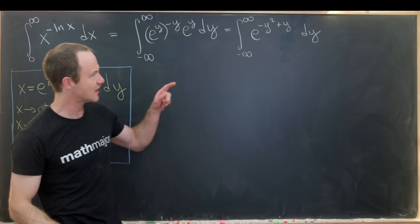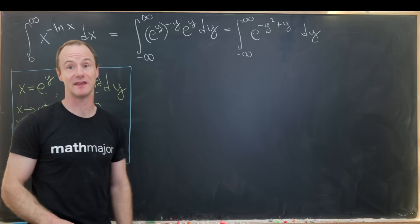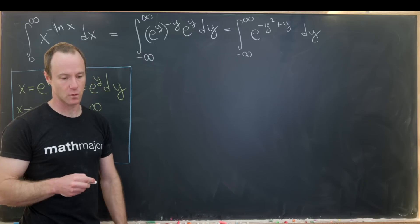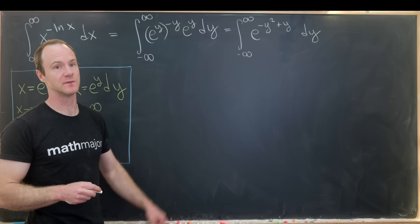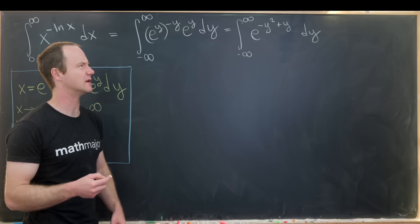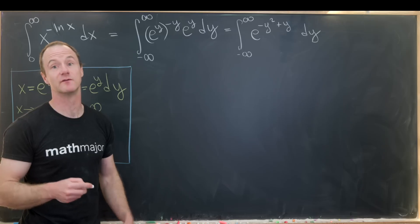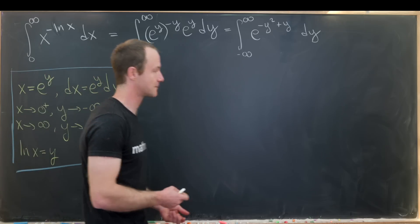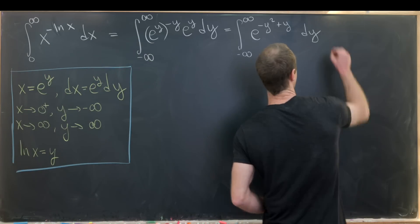And from here, I'll see that I have a quadratic in the exponent. But that really points me towards the Gaussian integral. So I'd like to make this look like the Gaussian integral, but that will involve doing some sort of completion of the square. So let's maybe do that over here.